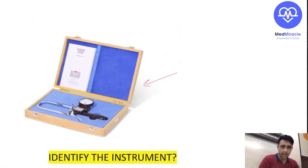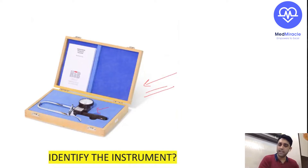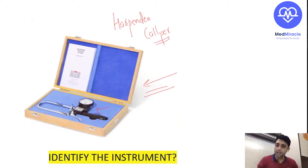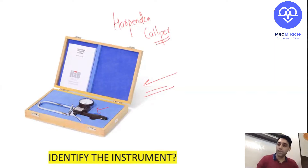This is nothing but a Harpenden caliper — to know the caloric reserve of the body, to know the body fat. This is a basic image-based question you should know. Recently in an MD Pediatrics medical exam in Indore, there were seven candidates given a newborn to examine for 30 minutes, and whatever findings they could tell. After the exam, six candidates failed and only one passed.